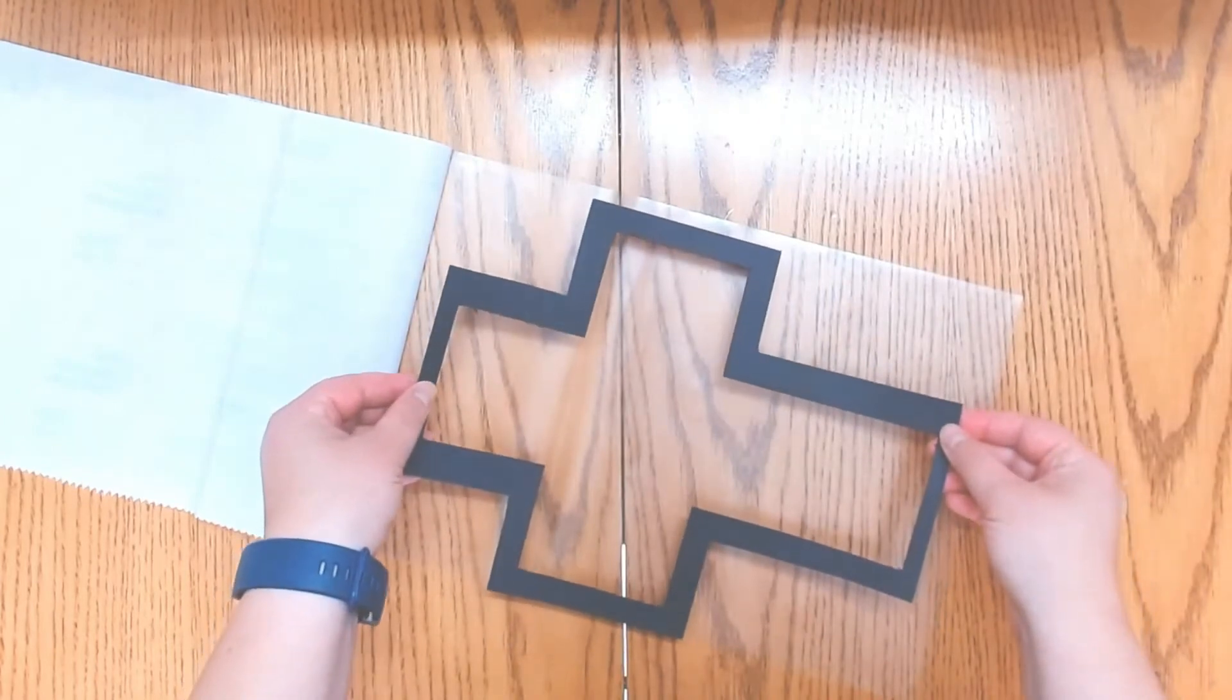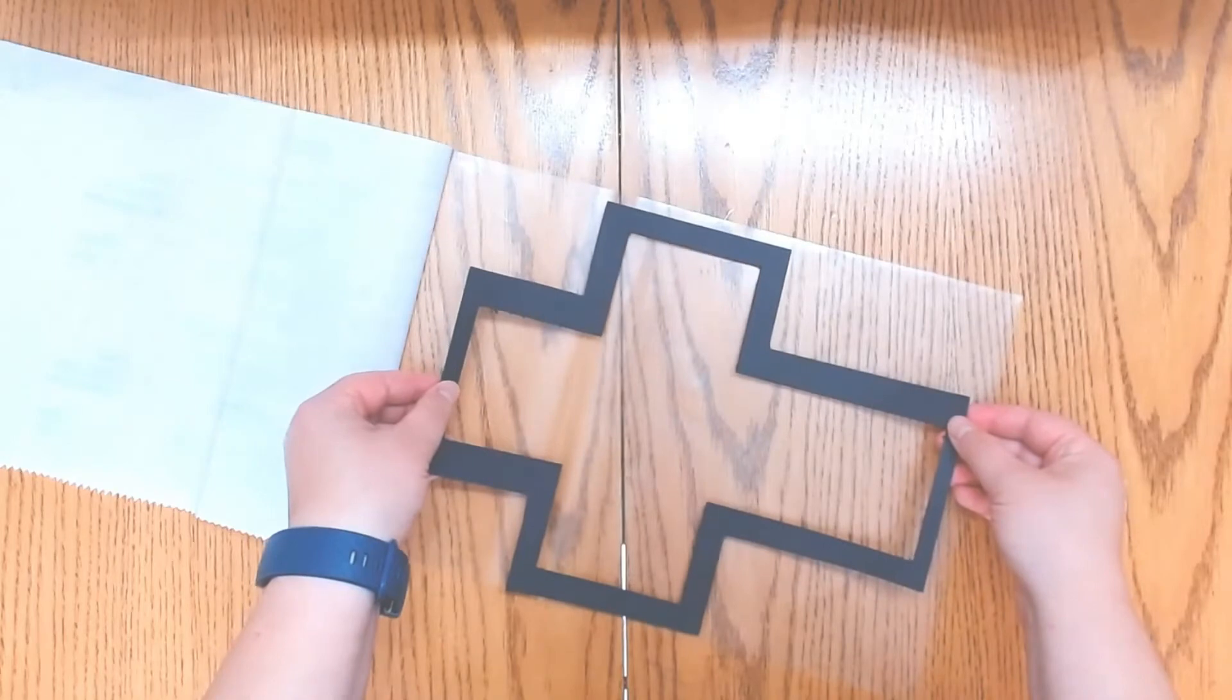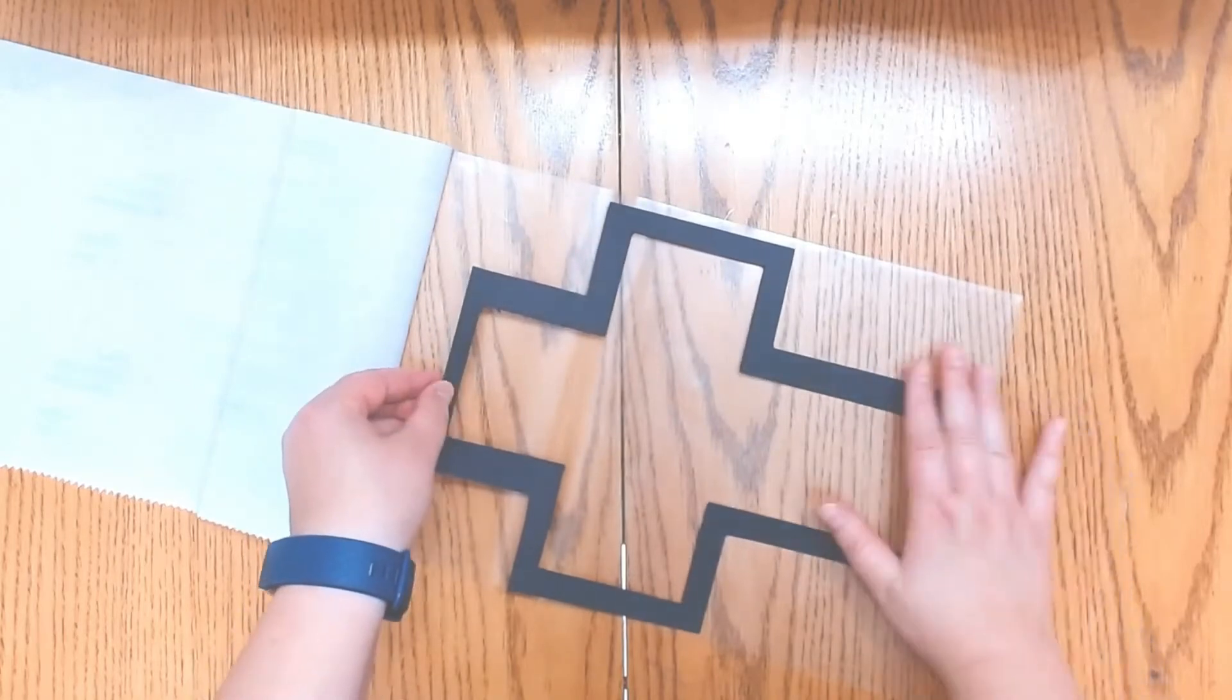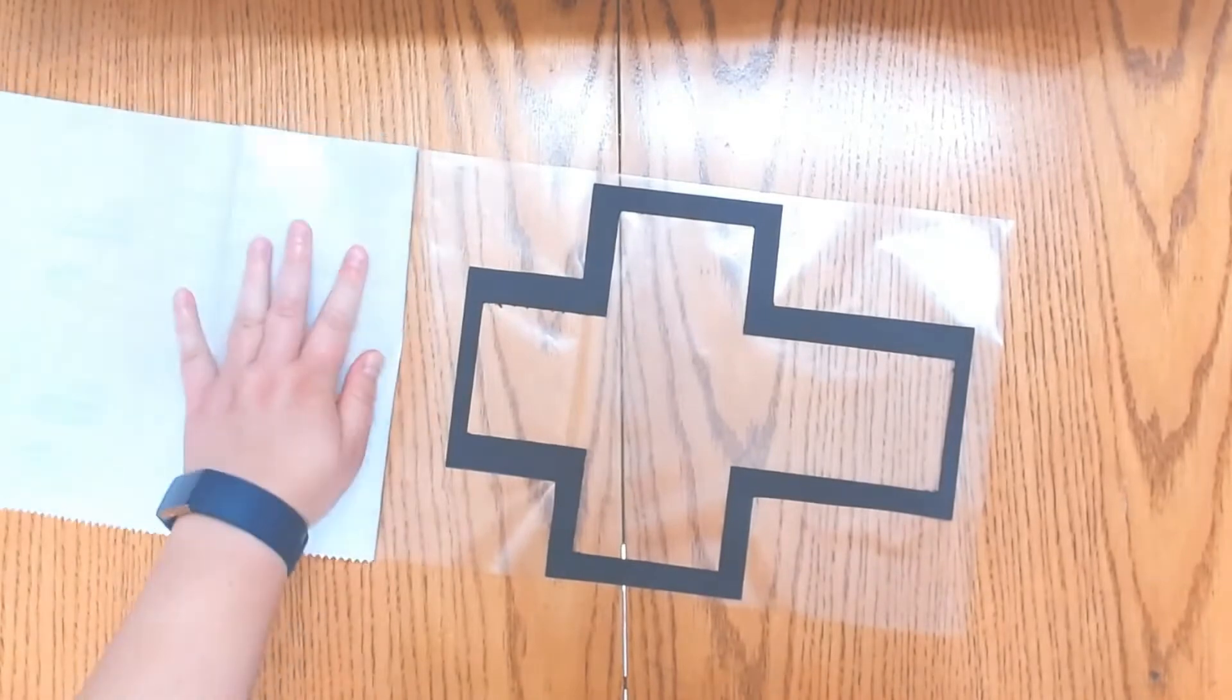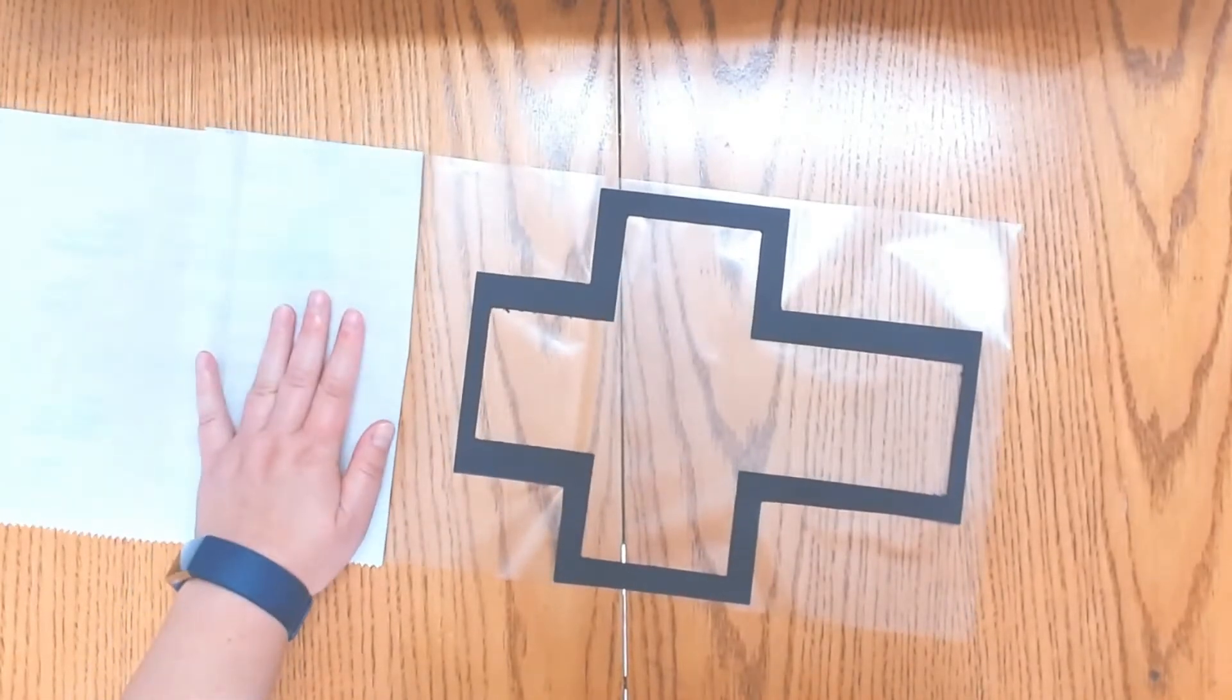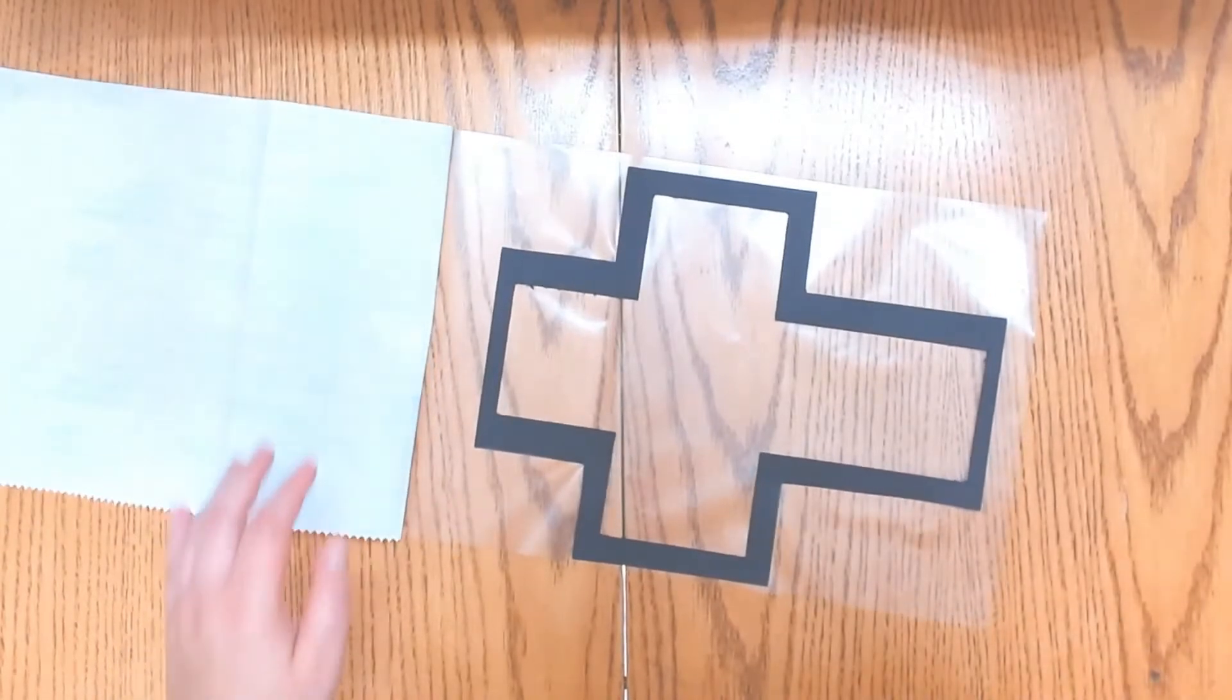Like so. Take your time with it because once the cross is on, it's going to permanently stay there. And now that we have it stuck, I would still recommend keeping this on just so that it gives you a little bit of grip without your hands getting all sticky. We're now going to take our colored tissue paper.